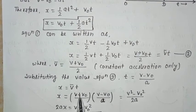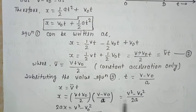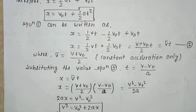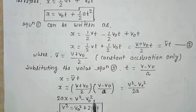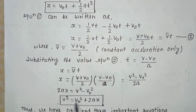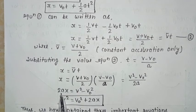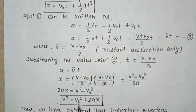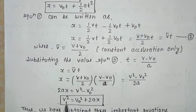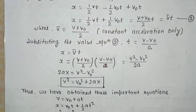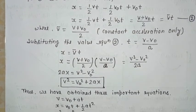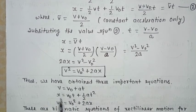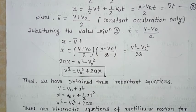Substituting, we get V² − V₀² on one side (using the (A+B)(A−B) formula) and 2aX on the other. Therefore V² − V₀² = 2aX, which gives us V² = V₀² + 2aX. Thus we have obtained three important kinematic equations: V = V₀ + at; x = V₀t + ½at²; V² = V₀² + 2aX.